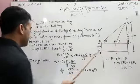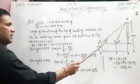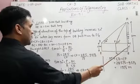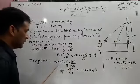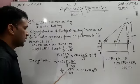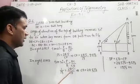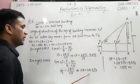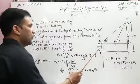tan 30 is equal to perpendicular upon base, that is AC upon CD. Value of tan 30, 1 upon root 3, is equal to AC, 28.5 upon CD.